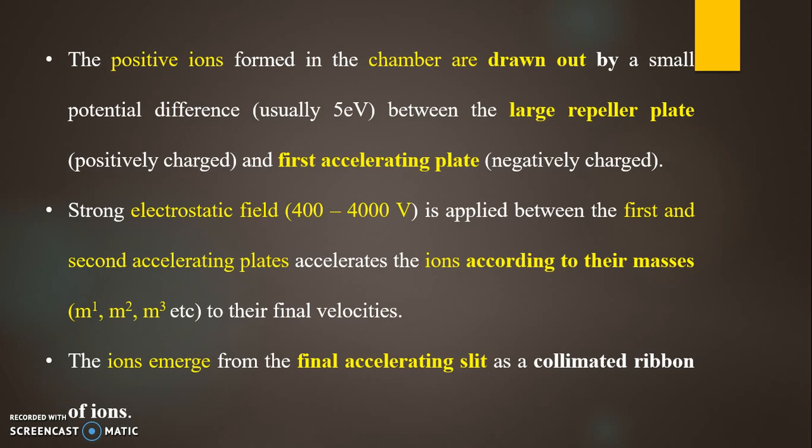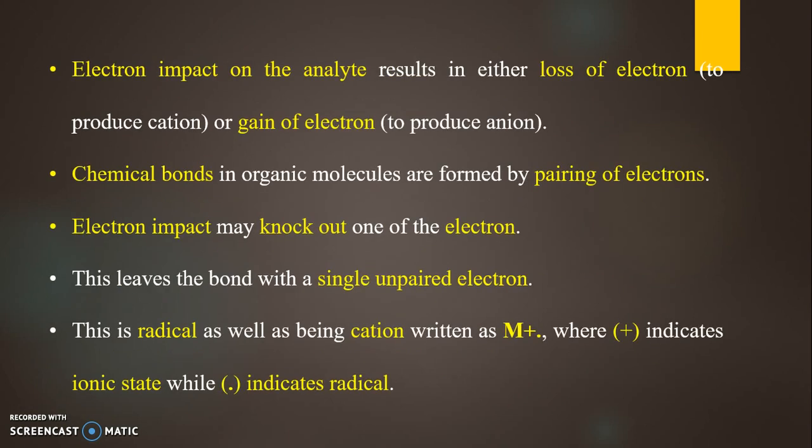Now generally the electron beam is given an energy in the range of 50 to 70 electron volts which gives the most reproducible results. Doubly charged ions are rare even at this potential.